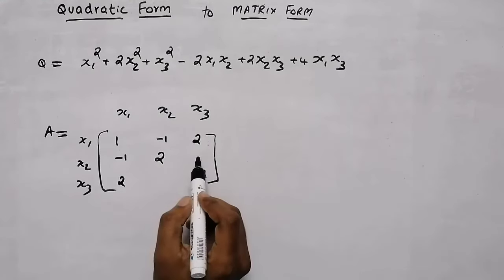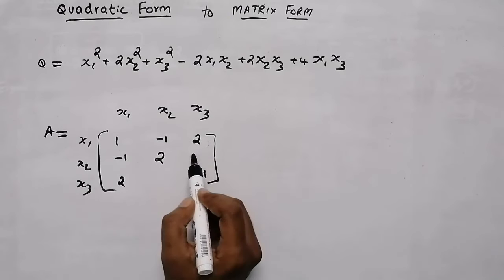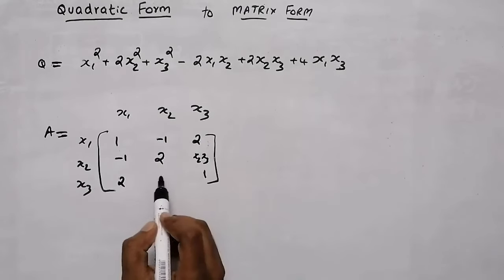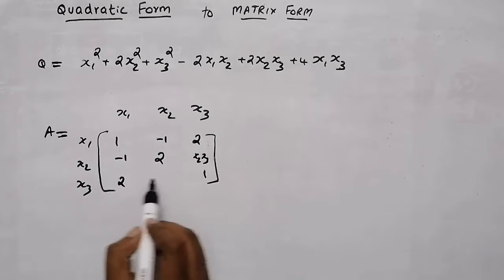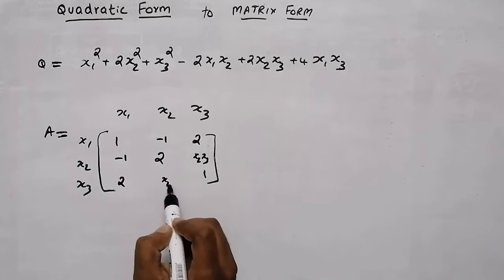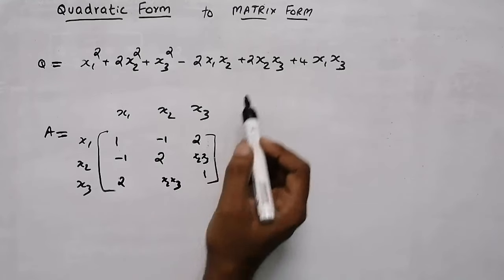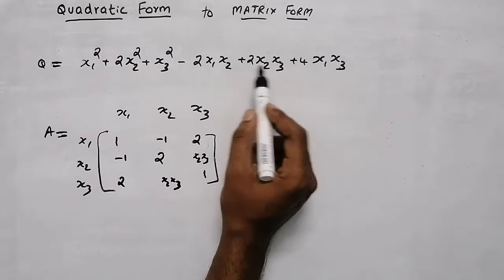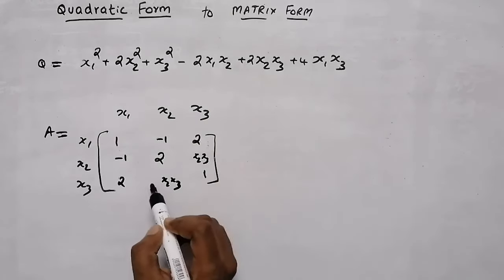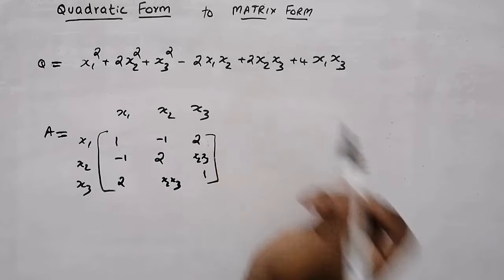Now, this element is the product of x2 and x3. Here also, x3 and x2 — that means same as x2·x3. The coefficient of x2·x3 is 2. We need to give half here and half here — two's half is 1, so 1 here and 1 here.